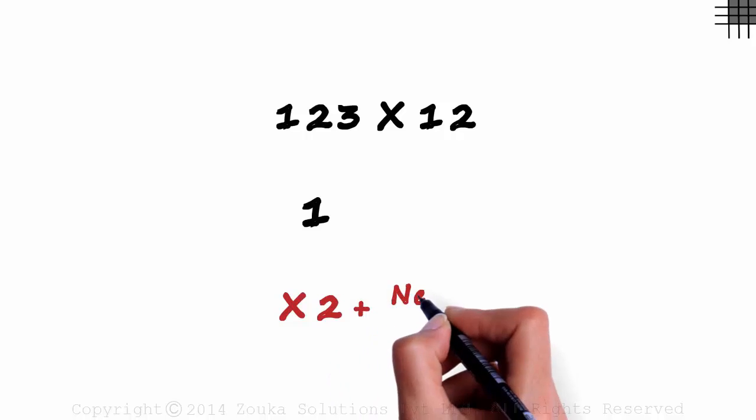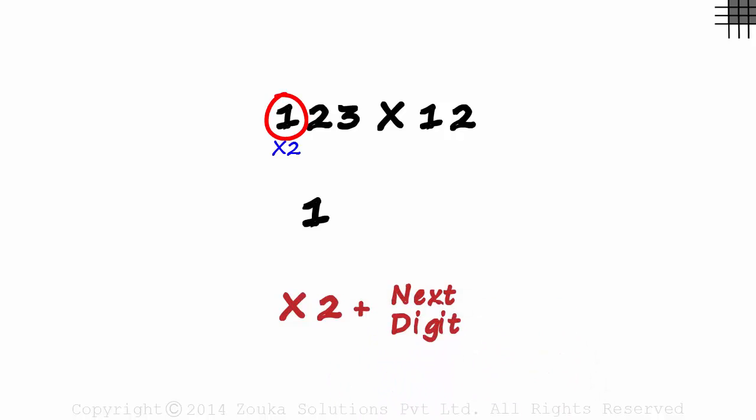123 times 12. Understand the steps well. We are looking at multiplying a number with 12. We write the first number as is: 1. Then we multiply the first digit of the number by 2 and add the next digit. So we multiply 1 with 2 and add the product with the next digit which is 2. 2 plus 2 is 4. This step remains constant until we reach the last digit. So next, we multiply the second digit 2 with 2 and add it to the third digit which is 3. 4 plus 3 is 7. And in the end, we multiply the last digit by 2. 3 times 2 is 6. 123 multiplied by 12 is equal to 1476. First digit as is, then multiply by 2 and add to the next digit until we reach the last digit. And then multiply the last digit by 2.